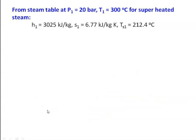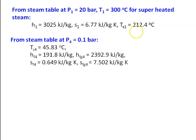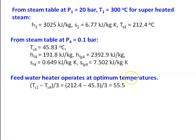From the steam table at P1 equal to 20 bar and T1 equal to 300°C (superheated steam): H1 equal to 3025 kJ/kg, S1 equal to 6.77 kJ/kg·K, saturation temperature equal to 212.4°C. At condenser P4 equal to 0.1 bar: TS4 equal to 45.83°C, HF4 equal to 191.8 kJ/kg, HFG4 equal to 2392.9 kJ/kg, SF4 equal to 0.649 kJ/kg·K, SFG4 equal to 7.502 kJ/kg·K. The feed water heaters operate at optimum temperatures, with temperature interval equal to (212.4 minus 45.3) divided by 3 equal to 55.5°C.